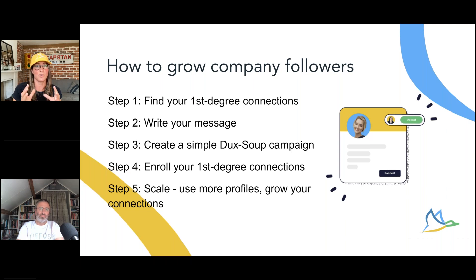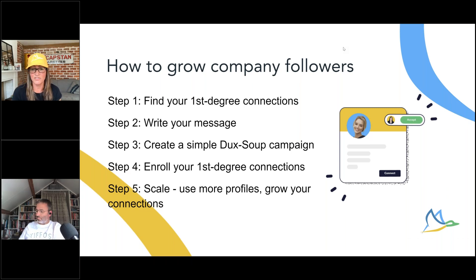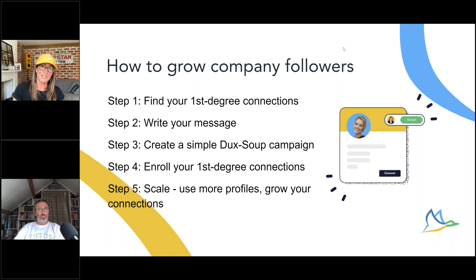We're going to show you how to do this using DuckSoup. You might be organically growing your company followers, but let's accelerate this. One company using DuckSoup is gaining seven new company followers every day. In three months their followers went from 395 up to 1,345. That took their average impressions per post from between 300 and 500 up to 4,000 per post — a lot more visibility to help grow your business.